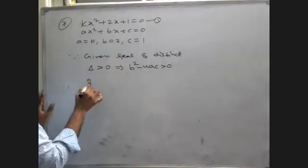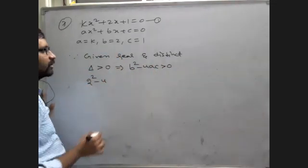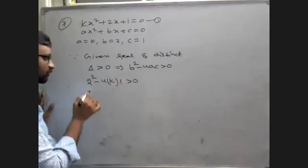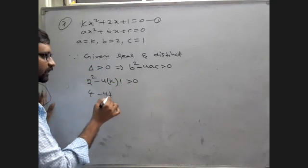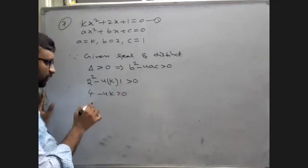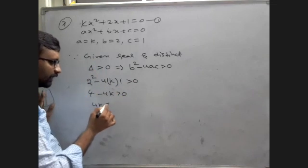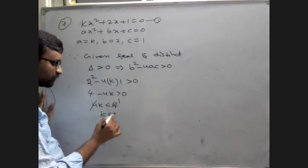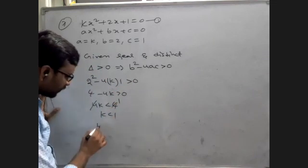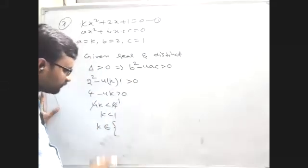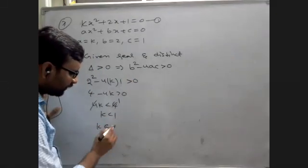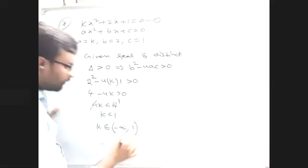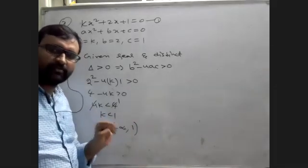4 - 4K > 0, which gives 4K < 4, so K < 1. K less than 1 means K belongs to the values minus infinity to 1, open bracket. All values less than 1, excluding 1 itself.